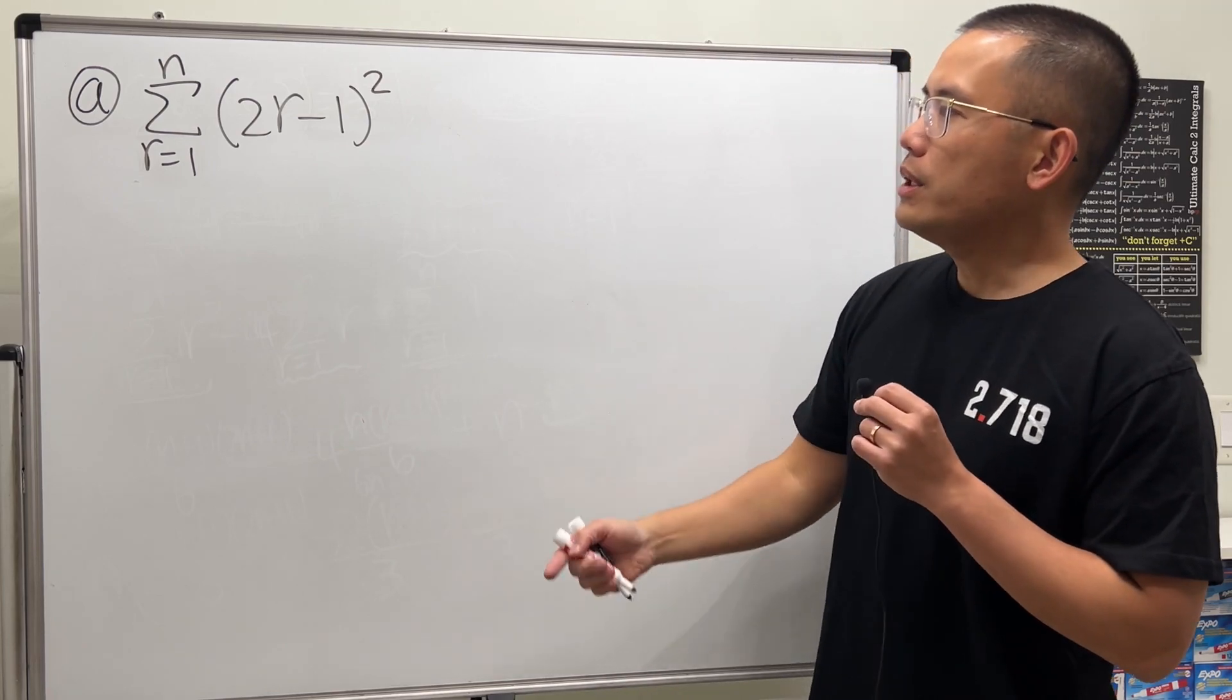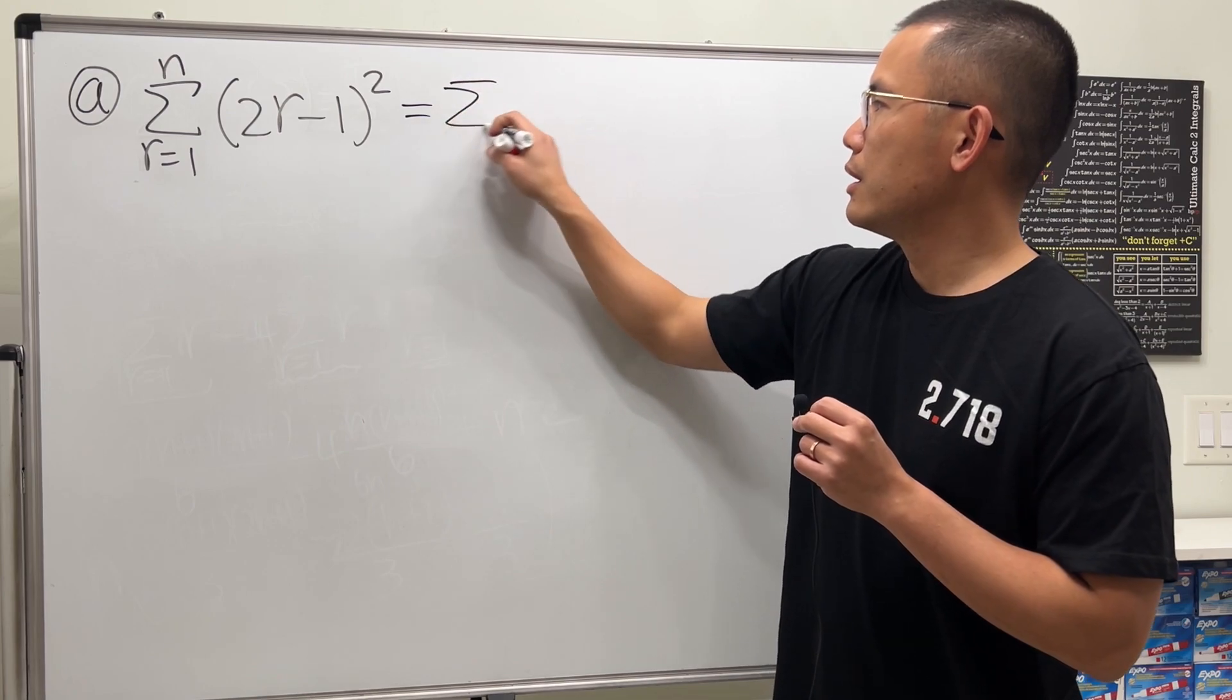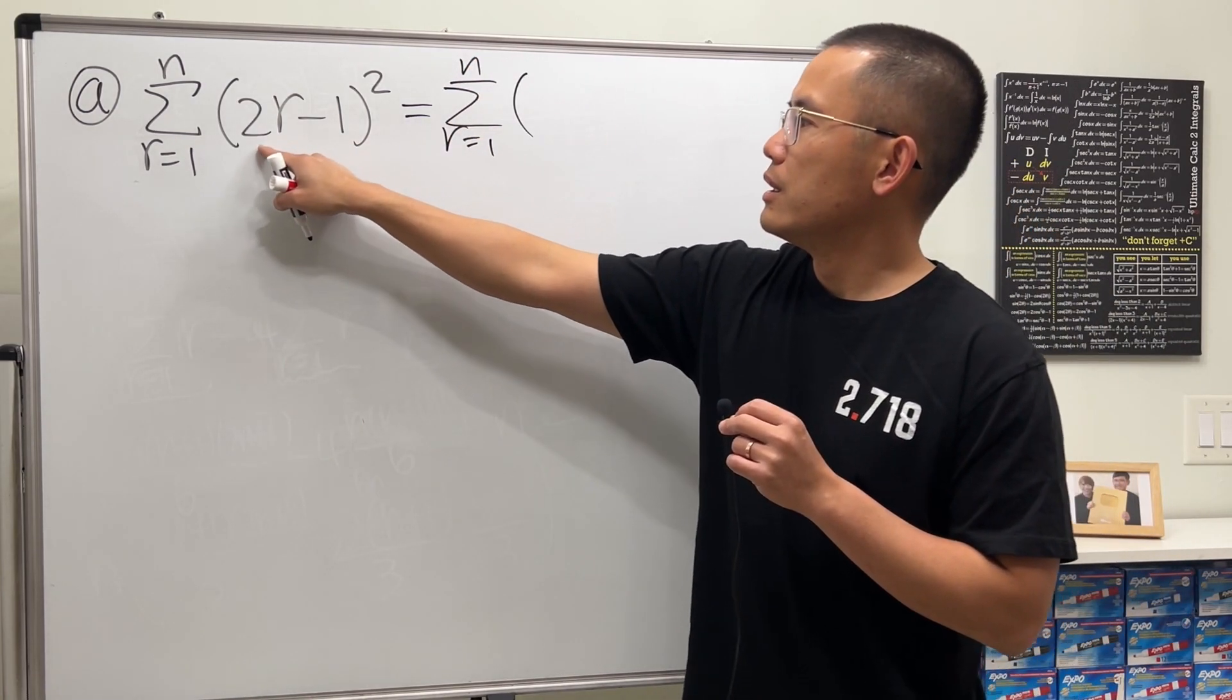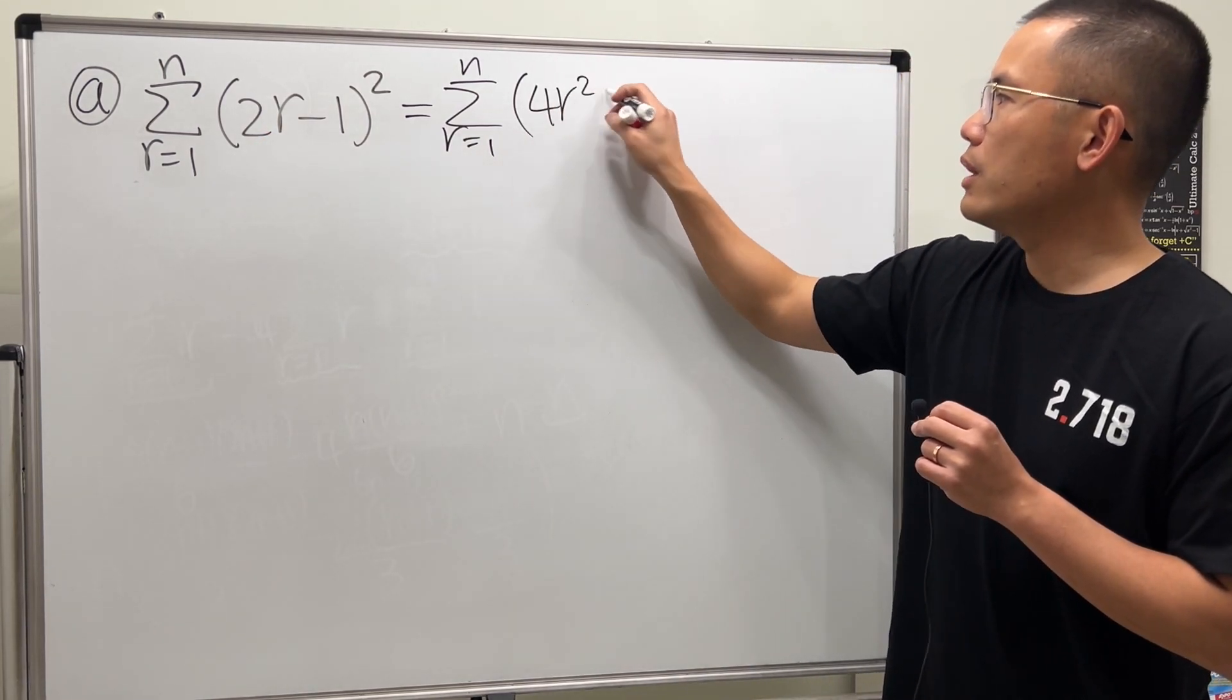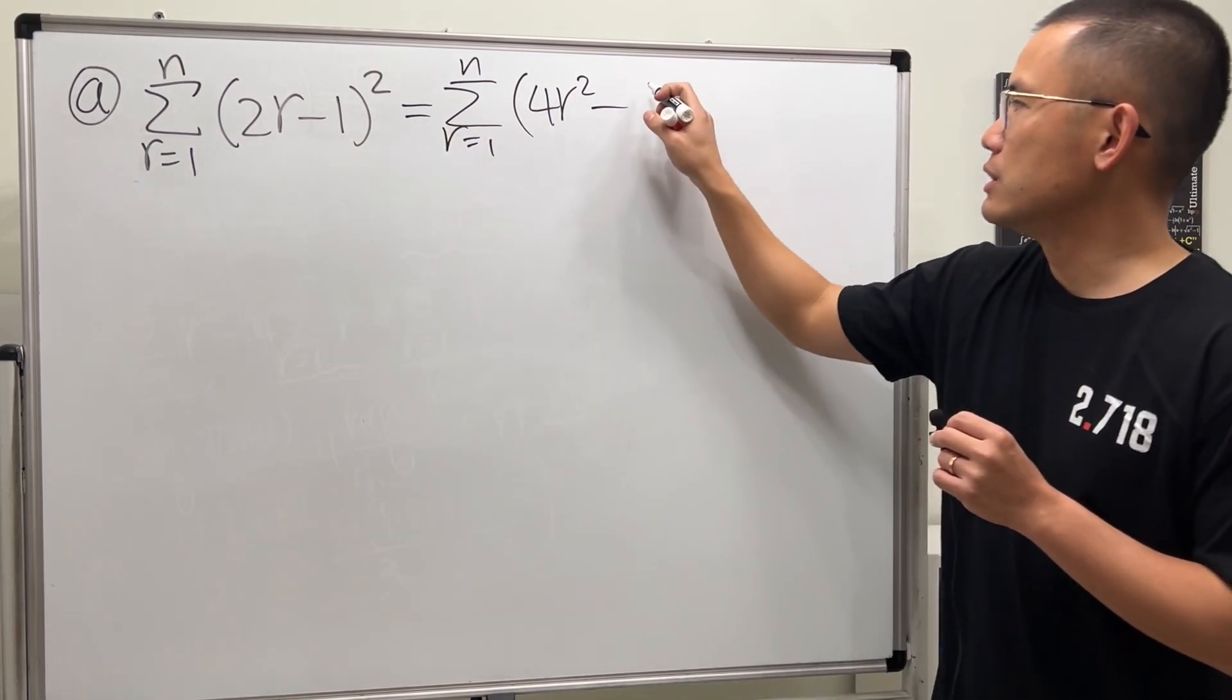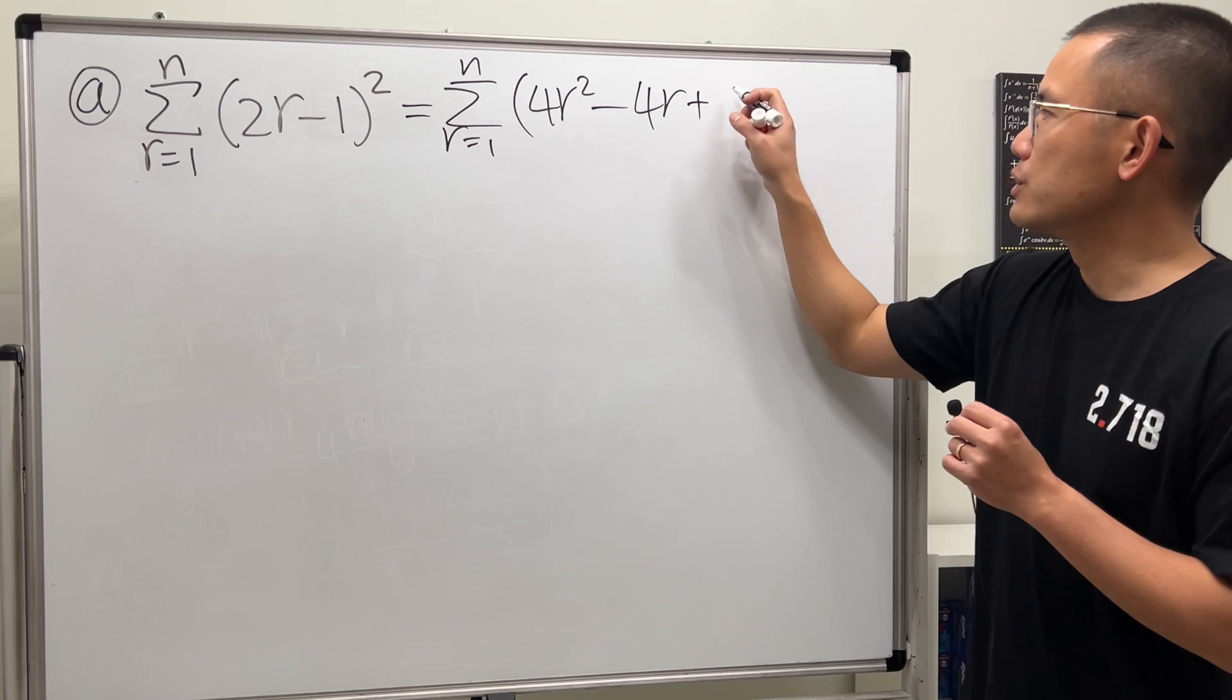So how we can do it is just first let's expand this. It's going to take some space, so I'm going to write it down here. r is equal to 1 to n and then this square is just you do the first thing squared which is 4r squared and then minus 2 times this and that which is 4r and lastly we add this square which is just 1.